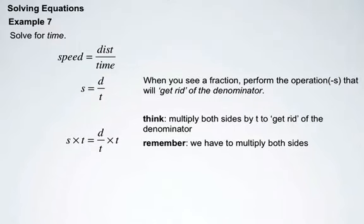After we multiply both sides by t, we end up with s times t, st, equal to d, because t times t and t divide t will equal 1. They cancel each other out.